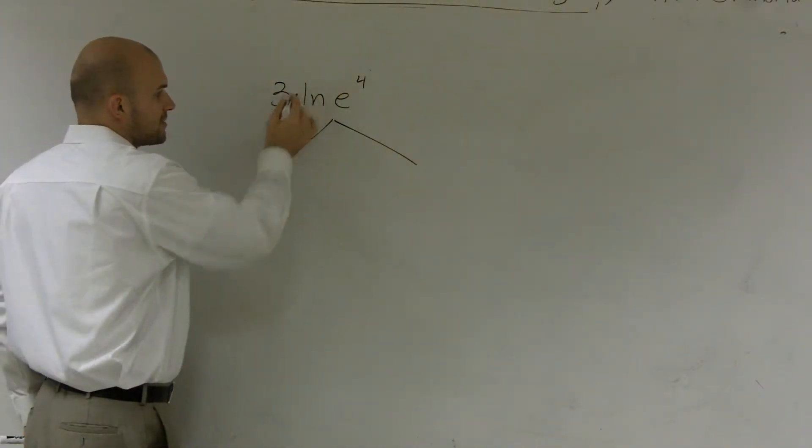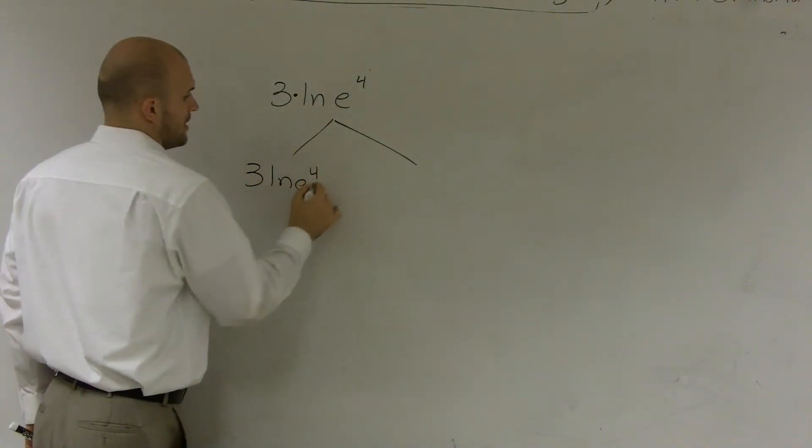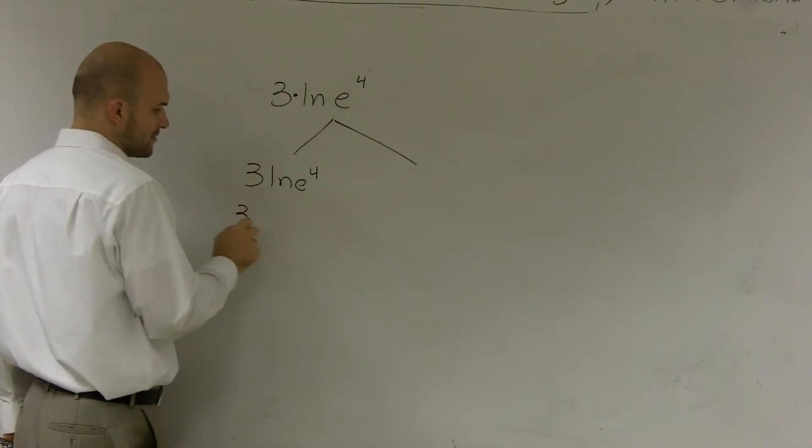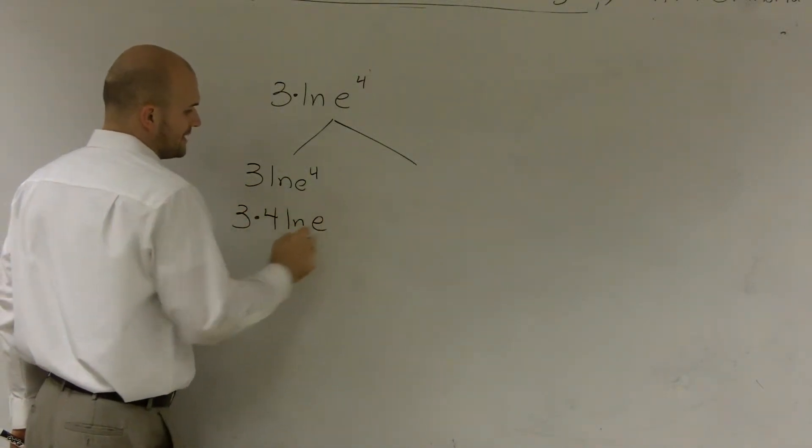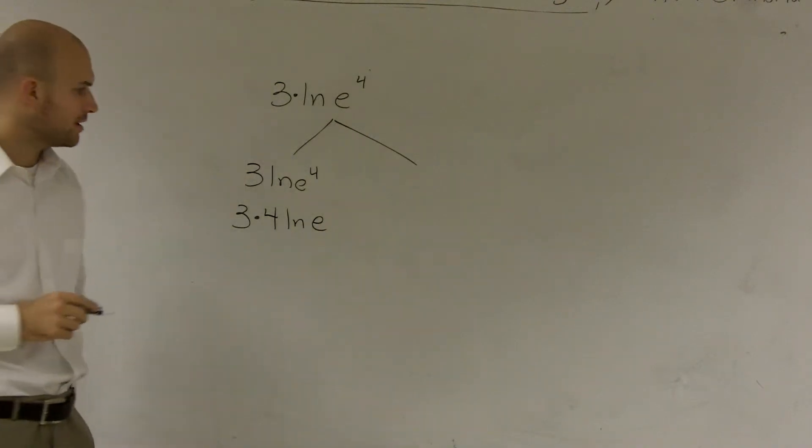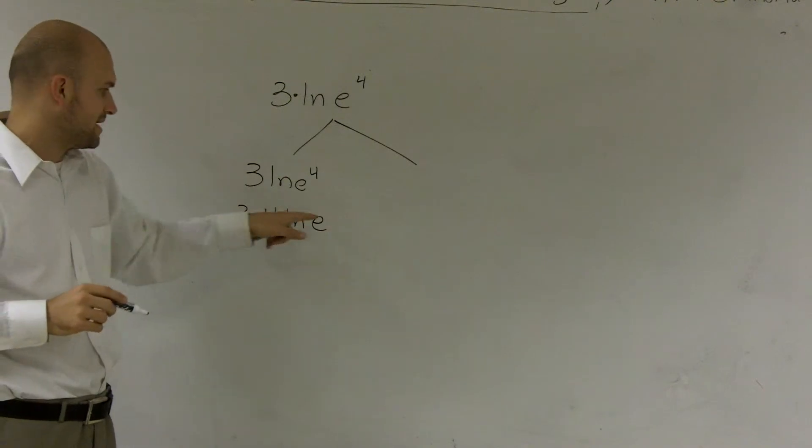Right now I have a multiplication problem. I can bring this 4 down in front, so it's going to be 3 times 4 times ln of e. When you bring that number in front, you're multiplying it by the ln.